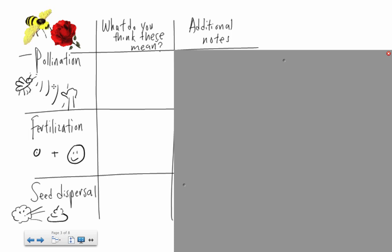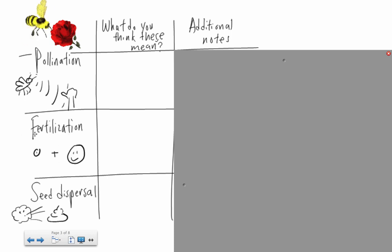Pollination - there's a little bee - it's going to help to actually transfer pollen from one flower to another. Fertilization is the actual meeting of the gametes, of the male gamete and the female gamete, or the pollen and what's stored in the ovary. And the result of fertilization will produce a seed, and that seed can get dispersed from one place to another.